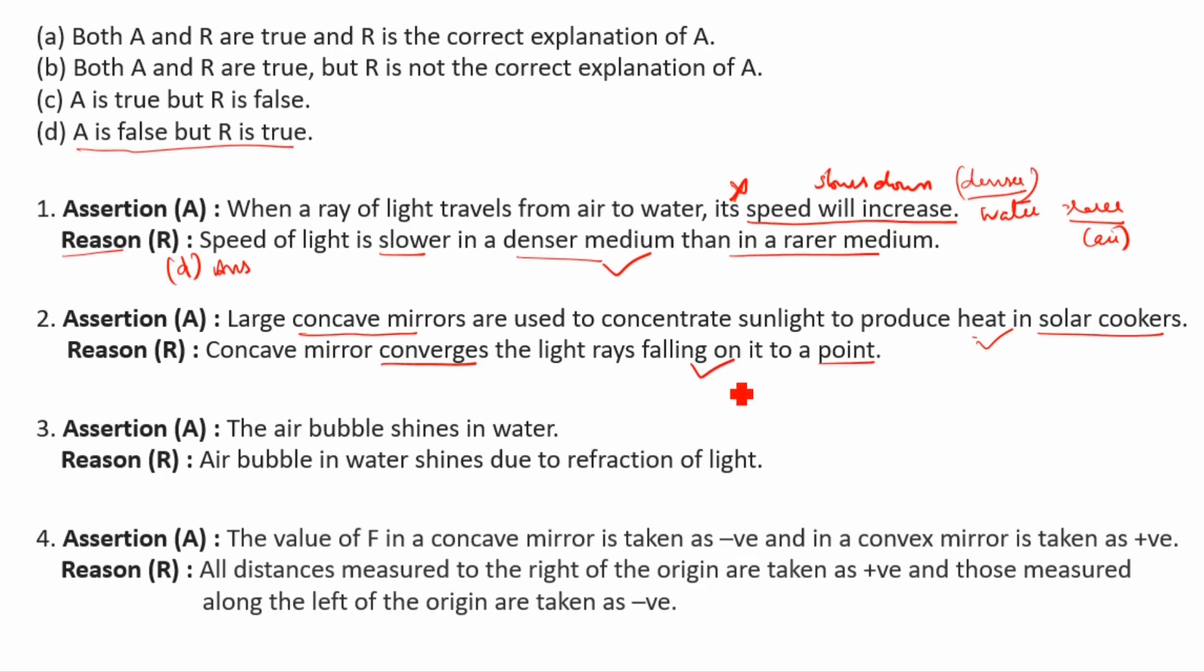So A and R is correct. Assertion and reason both A and R are true, and R is the correct explanation of A. This is correct explanation only, so A is the answer.